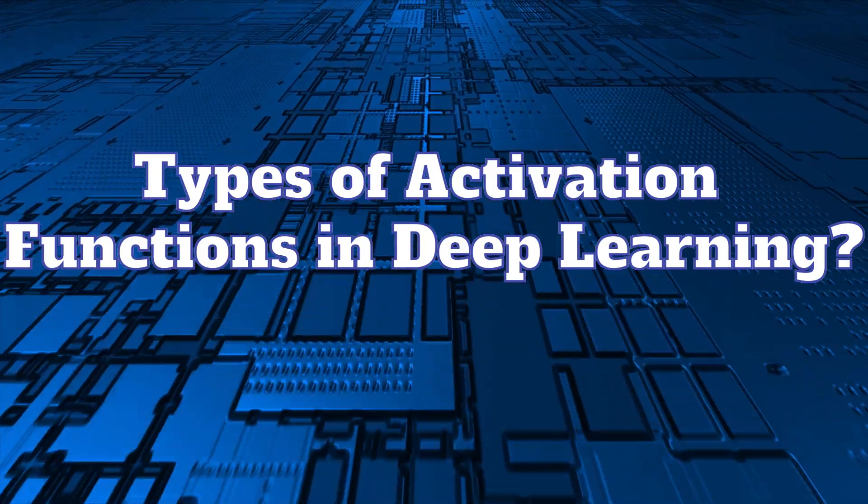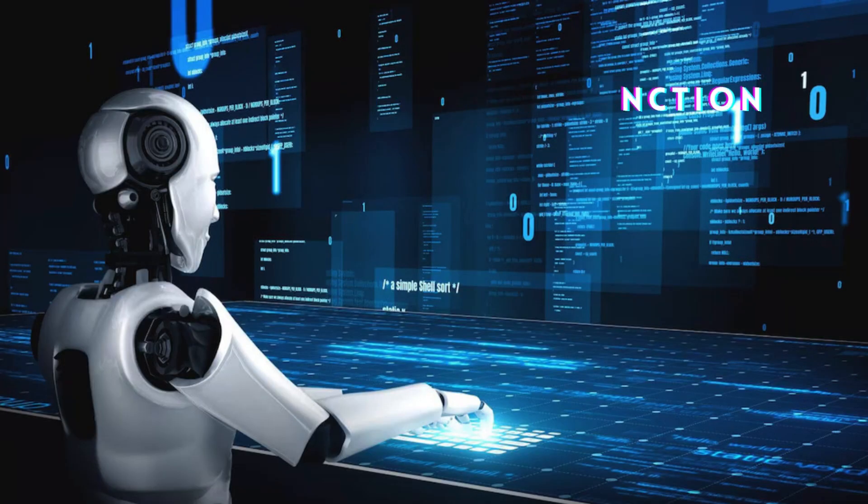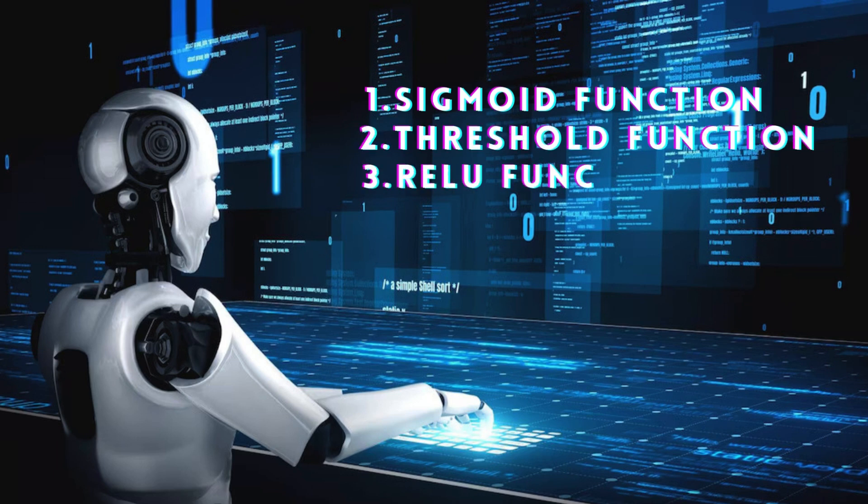Types of activation functions in deep learning include: sigmoid function, threshold function, ReLU (rectified linear unit) function, and hyperbolic tangent function.